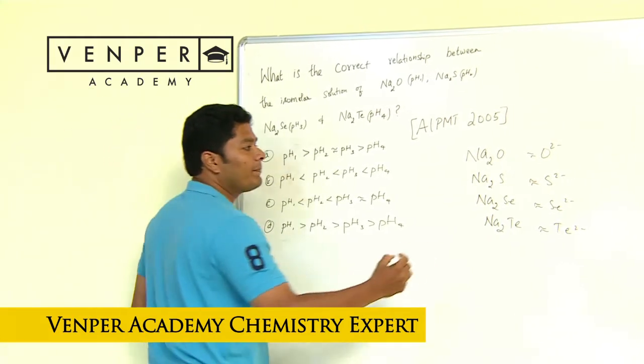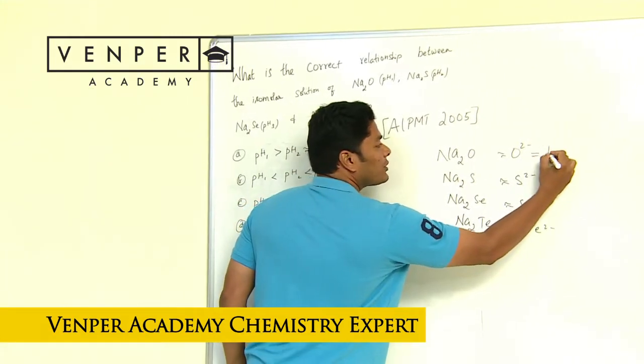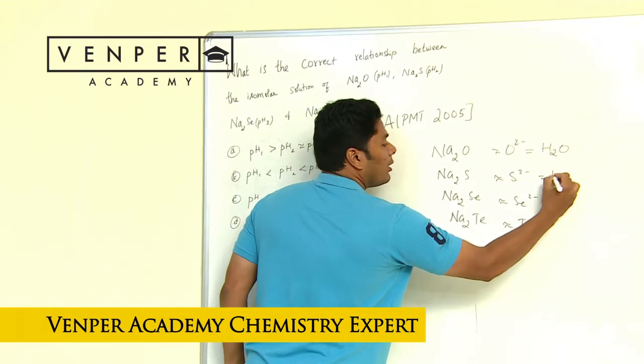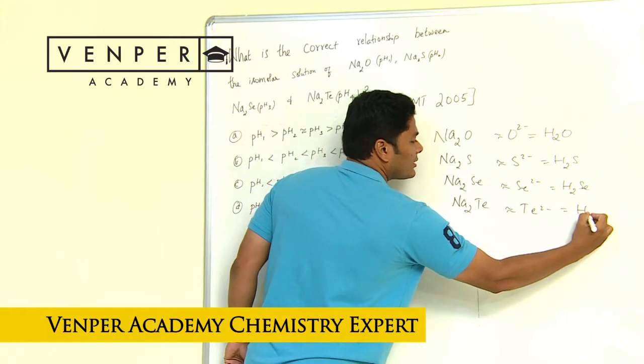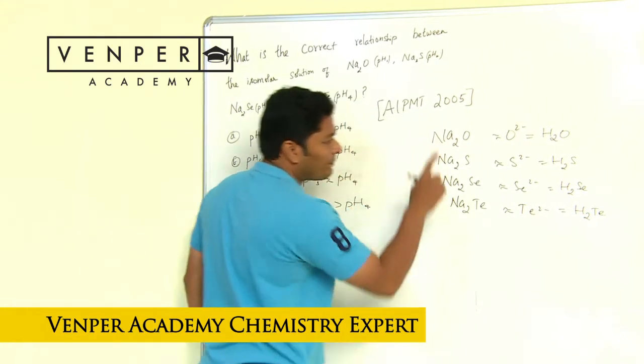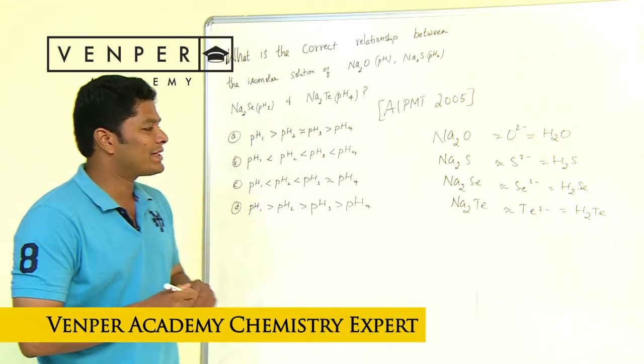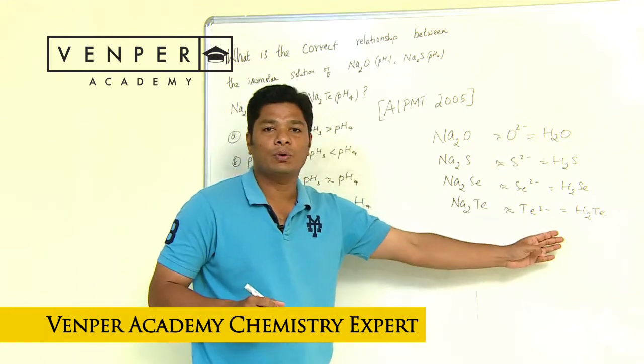Now look at these - these are bases. Look at the corresponding acids. This is what I would have taught you in periodicity. A corresponding acid for this would be H2O, H2S - not exactly a conjugate, this differs by two hydrogen - but still H2O, H2S, H2Se, H2Te.